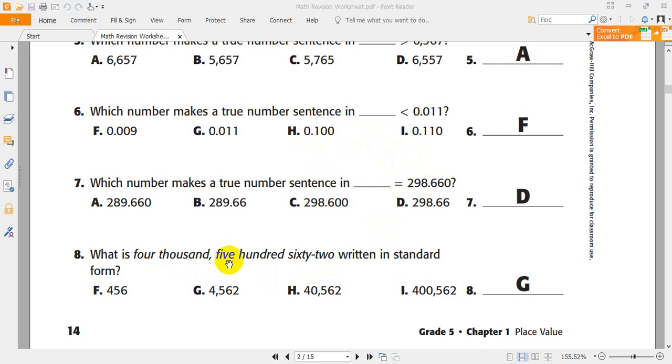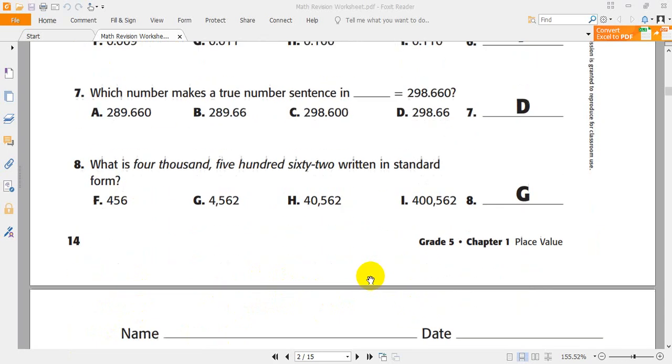What is 4,562? 4,562. As you see, that G is the right answer. Because F, 456. H, 40,562. I said 4. I didn't say 40. Here, 400,562. So, the right answer is G.